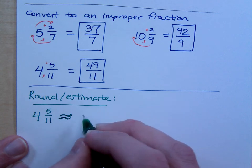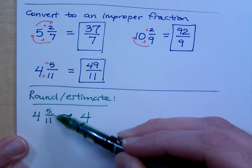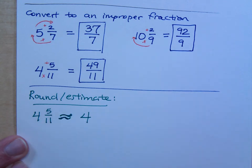It's actually closer to 4. And here's the reason. Look at 5 over 11. Is 5 half of 11 or greater or less than half of 11? It's just a little bit less than that, right?